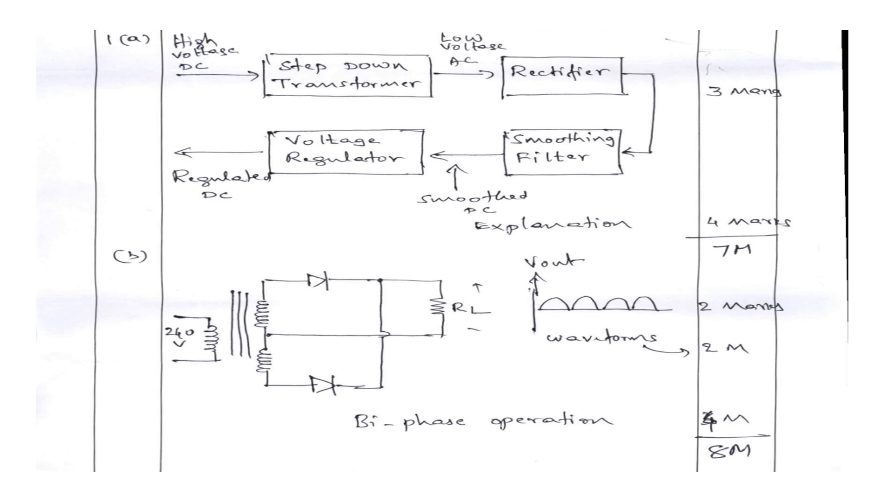For the full wave rectifier question, you will draw the circuit and the waveform — the waveform carries two marks, the circuit diagram carries two marks, and the operation explanation carries four marks, totaling eight marks. For the C question on amplifier terms, voltage gain AV equals Vout by Vin, input resistance equals input voltage divided by current, and bandwidth equals upper cutoff frequency minus lower cutoff frequency (F2 minus F1). Each term written with explanation carries one to five marks.